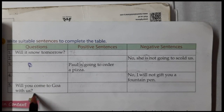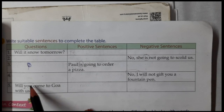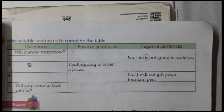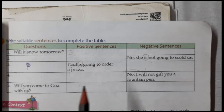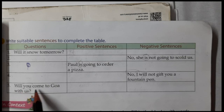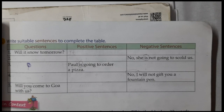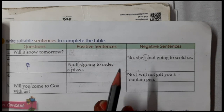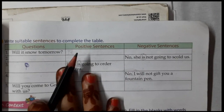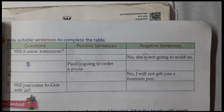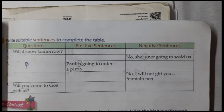Number five: 'Will you come to Goa with us?' The subject is 'you.' Positive sentence: 'You will come to Goa with us' — helping verb after the subject. For negative, put not after the helping verb: 'You will not come to Goa with us.' We have successfully completed this exercise. The conversion of positive sentences into negative and into questions should now be completely clear to you all.